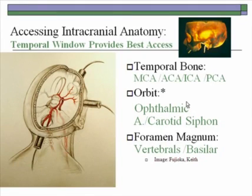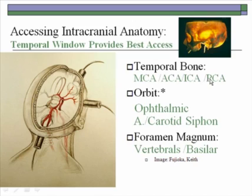To assess the circle of Willis you must insonate through the bone. There are three windows routinely utilized: the temporal bone, where you can insonate the middle cerebral artery, the anterior cerebral artery, the internal carotid artery terminal branch, and the posterior cerebral artery. The orbit provides visualization of the ophthalmic artery and the carotid siphon — you can track the ophthalmic artery through the natural opening of the eye to its origin at the internal carotid or the S-shaped curve of the carotid siphon.